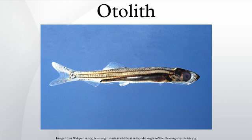Finfish have three pairs of otoliths: the sagittae, lapilli, and asterisci. The sagittae are largest, found just behind the eyes and approximately level with them vertically. The lapilli and asterisci are located within the semicircular canals. The shapes and proportional sizes of the otoliths vary with fish species. Fish from highly structured habitats such as reefs or rocky bottoms will have larger otoliths than fish that spend most of their time swimming at high speed in straight lines in the open ocean. Flying fish have unusually large otoliths, possibly due to their need for balance when launching themselves out of the water to fly in the air.